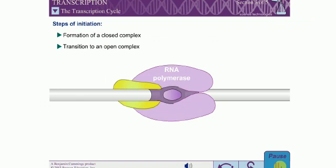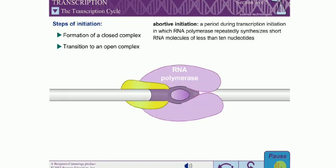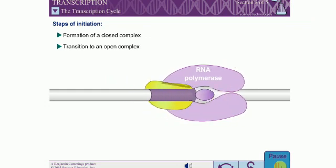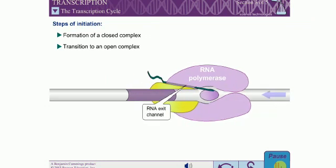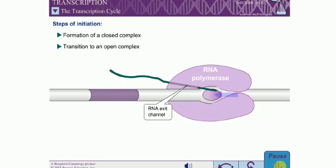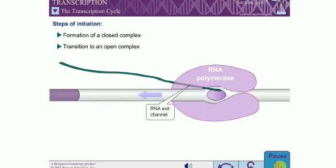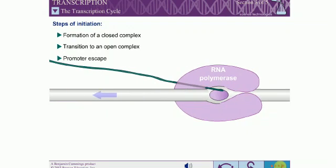In contrast with DNA polymerase, RNA polymerase is able to begin synthesis of a new polynucleotide without a primer. In bacteria, however, once RNA synthesis begins, the RNA polymerase goes through a period called abortive initiation. The enzyme synthesizes short RNA molecules of less than 10 nucleotides, probably because a region of sigma partially blocks the RNA exit channel. Once this region has been ejected and an RNA chain longer than 10 nucleotides has been synthesized, the elongation phase begins. Transition to the elongation phase is called promoter escape.